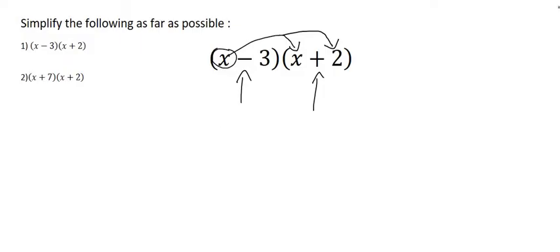x times x is x squared. Then we have x times 2, or plus 2, so that's going to be plus 2x. So we've done this x now.